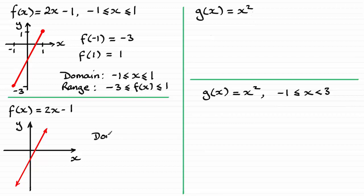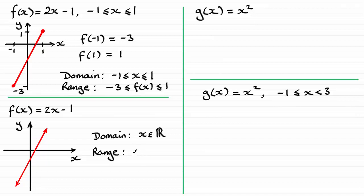So what does this mean for our domain? Well, it's unrestricted — we can have any value of x we like. So we say that x is any real number, using the real numbers notation, or that x is a member of the set of real numbers. For the range, the y-values — f(x) — can be greater than or equal to 0, or less than 0; in fact f(x) will be any real number. So the range is: f(x) is any real number.